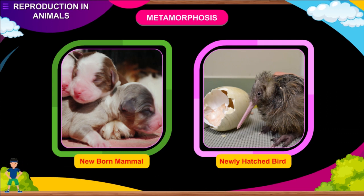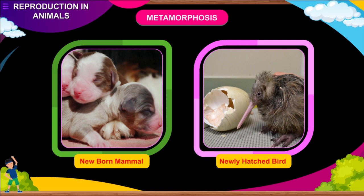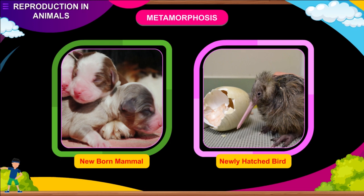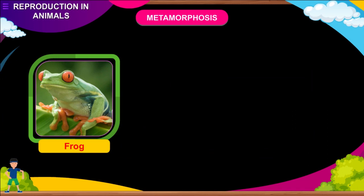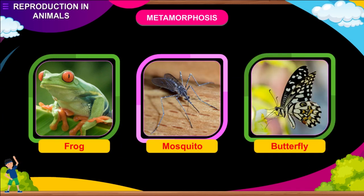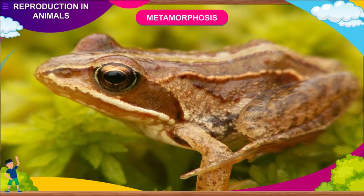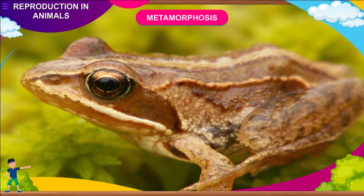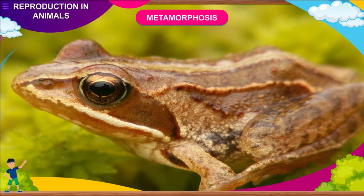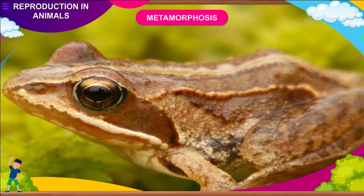Metamorphosis: newborn mammals and newly hatched birds have similar shape and structure as their parents. However, it is not true for the entire animal kingdom. A frog, mosquito, or butterfly have different stages of development between hatching of the eggs and formation of the individual. A frog passes through three stages during its development from an egg to an adult frog.